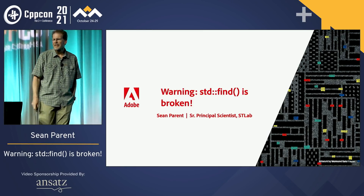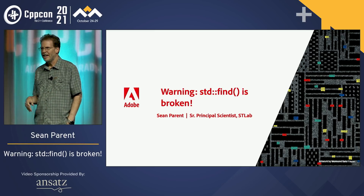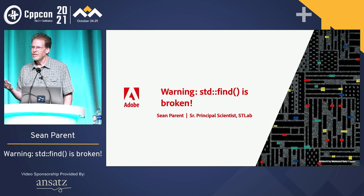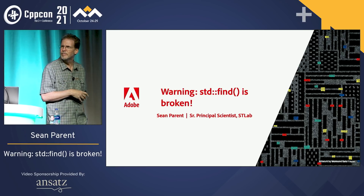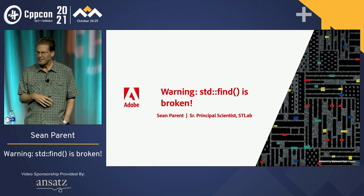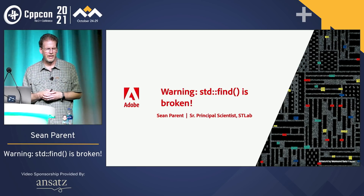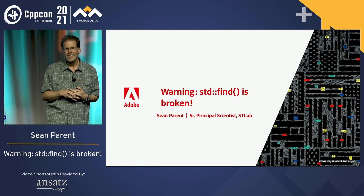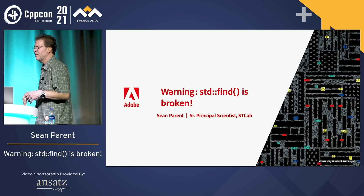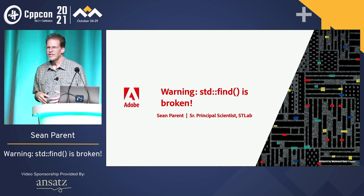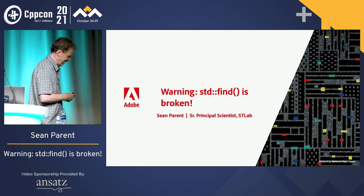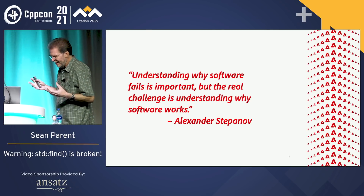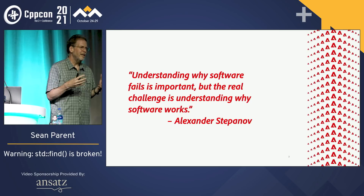Welcome everybody. I'm Sean Parent. I'm a senior principal scientist at Adobe. Until fairly recently, my title there said on the Photoshop team, but that's recently changed to the Software Technology Lab, which is with Dave Abrahams. So Dave and I are restarting the Software Technology Lab at Adobe. I put this title on the slide: Warning, std::find is Broken. This is my clickbait title. I just got you guys to sit through a 90-minute light introduction to formal methods. So to understand how std::find is broken, we're going to have to understand a little bit about how we reason about software.